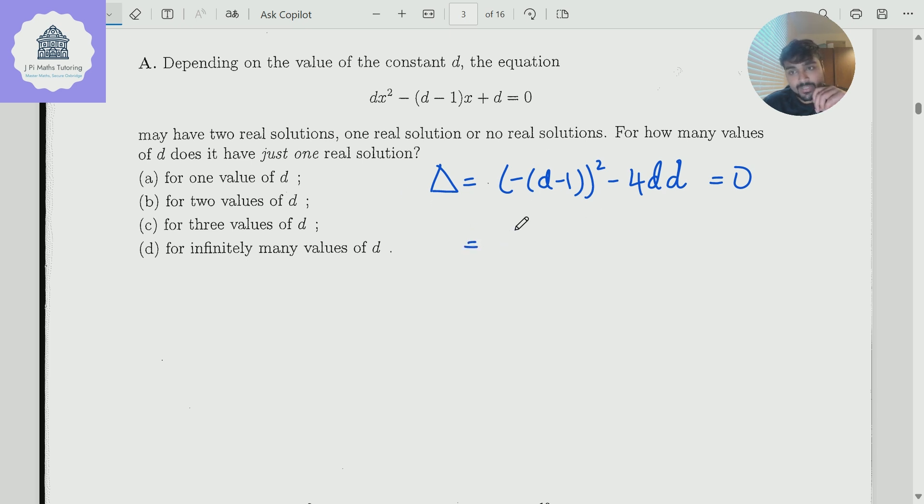So we look at this thing, and if we expand this out, we're going to get d squared minus 2d plus 1 minus 4d squared equals 0. So if I bring everything onto one side, I get 3d squared plus 2d minus 1 equals 0.